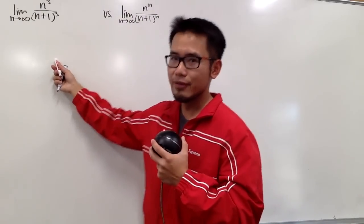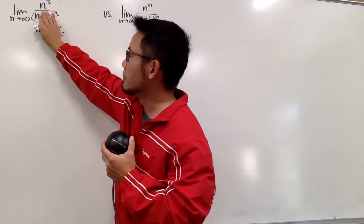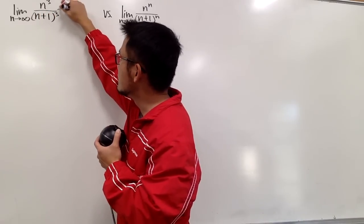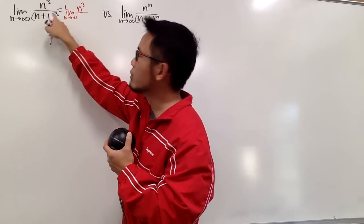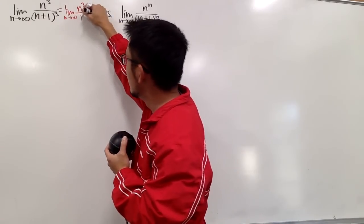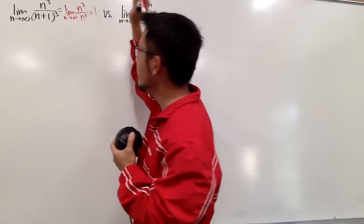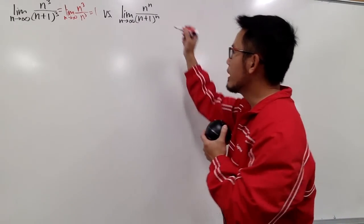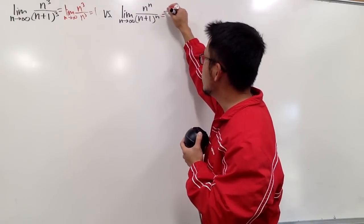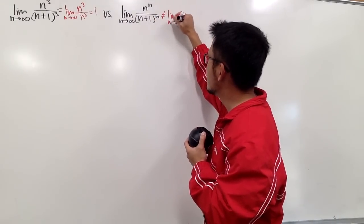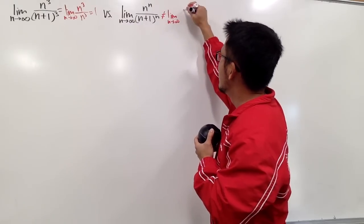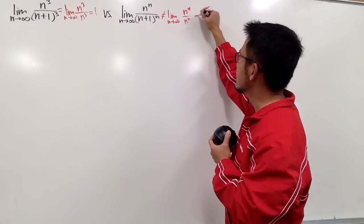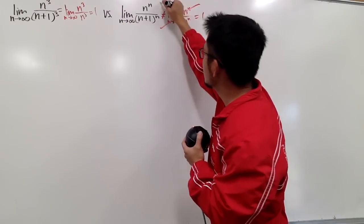For the first one, if you want to just ignore the plus 1 on the bottom and say this is the same as n to the third power over n to the third power, that equals 1 — that's okay. But we cannot do the same thing for the second one. We cannot ignore the plus 1 and say it equals n to the n over n to the n, which would give 1. That is not correct.